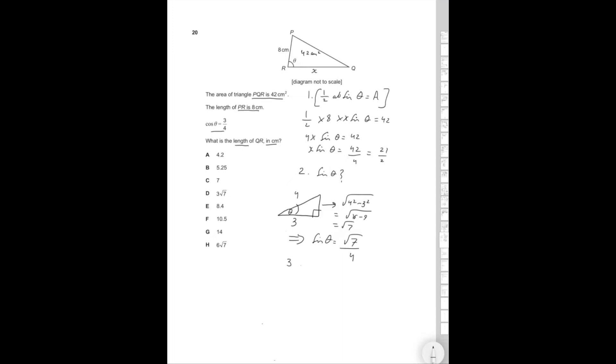So then step three is going to be simply dividing the right side by sine theta. x is going to be 21 over 2 divided by root 7 over 4, which is equal to 21 over 2 times 4, then divided by root 7, which is going to be 84 over 2 divided by root 7, which is going to be equal to 42 over root 7.